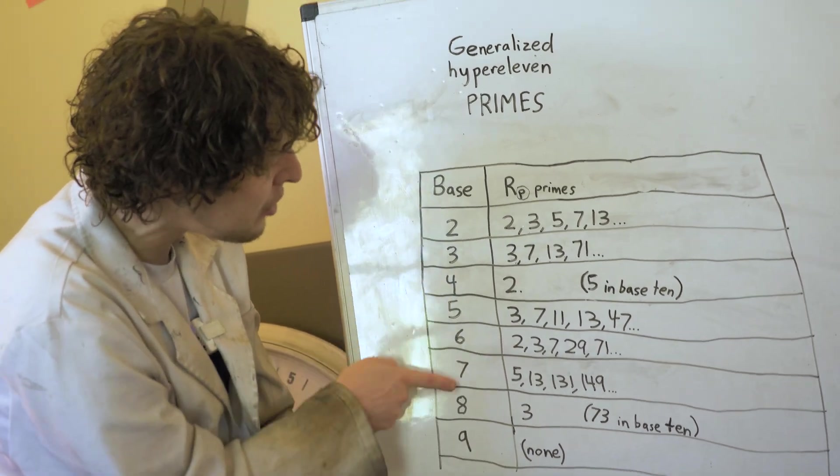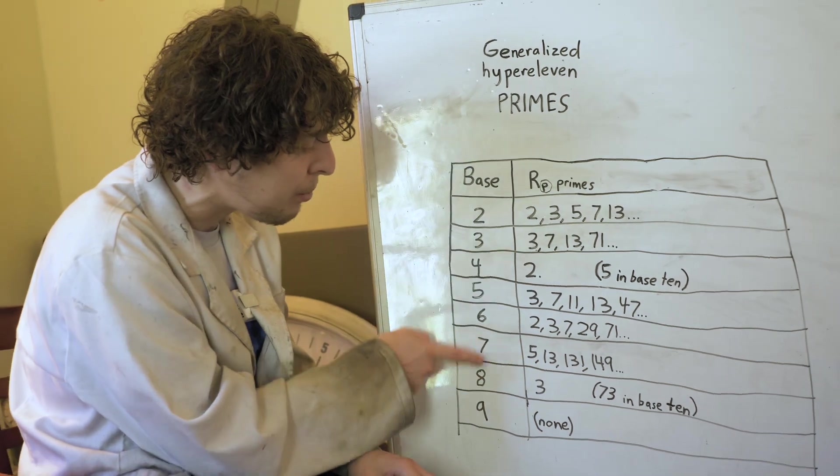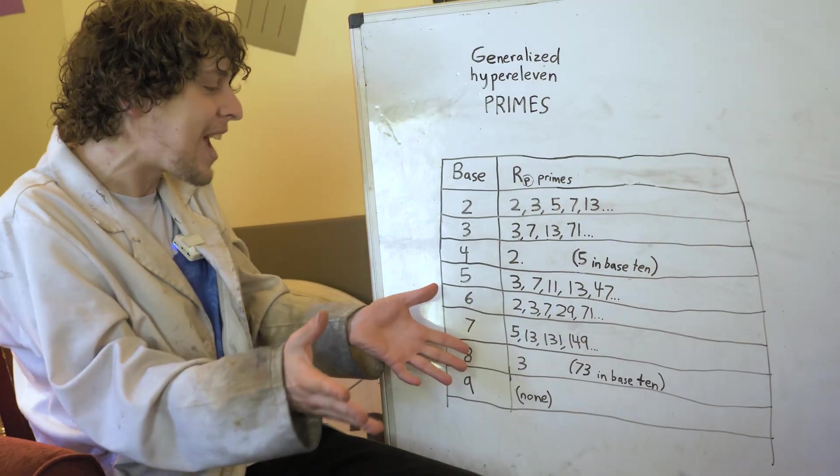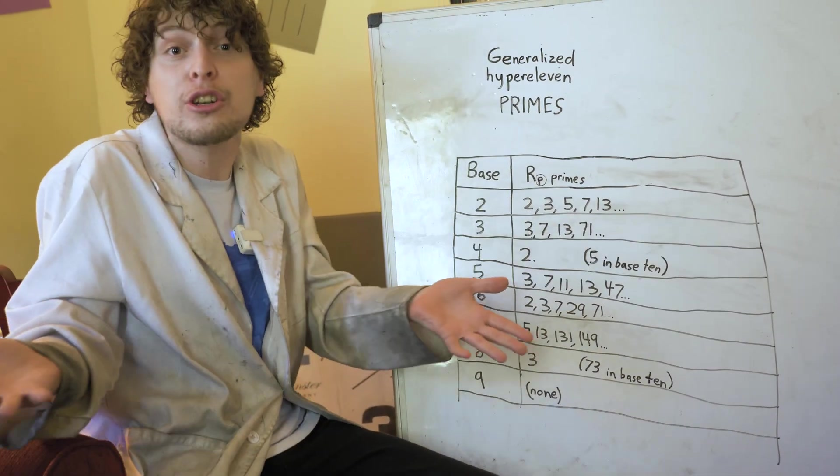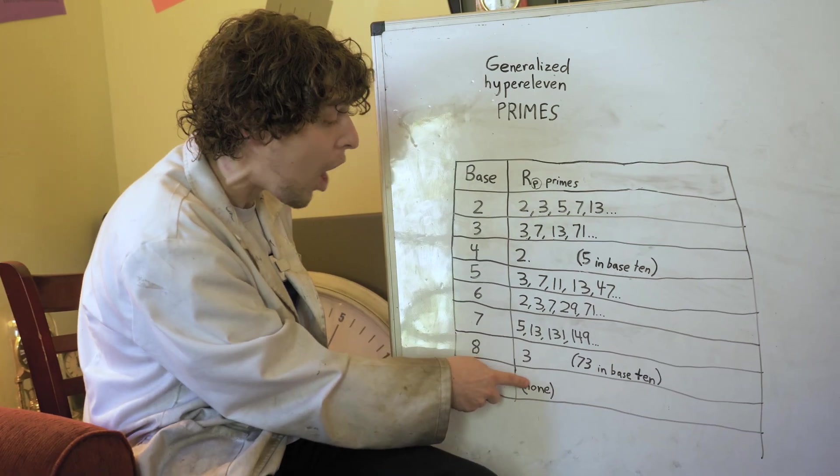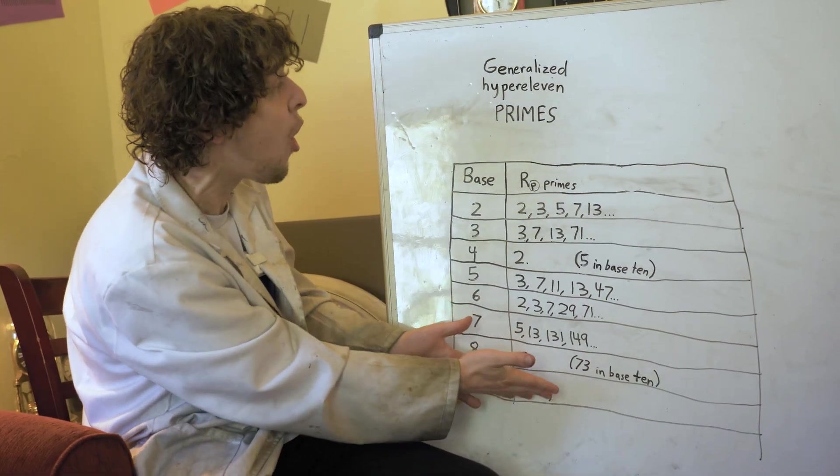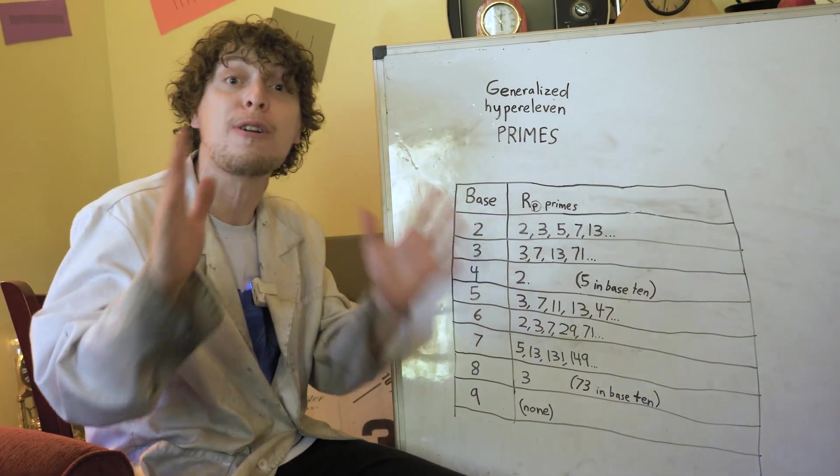These numbers are different because they're perfect powers, a square number, a cube, another square. And it turns out if your base is a perfect power, it factorizes too easily, and there will be a maximum of one, sometimes zero hyper 11 primes in any base that's a perfect power.